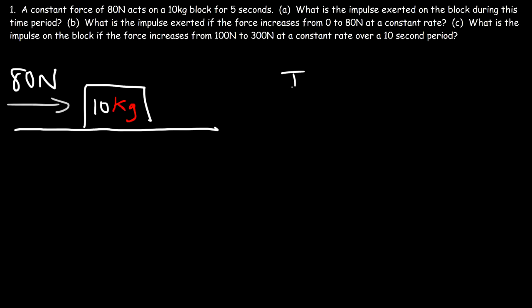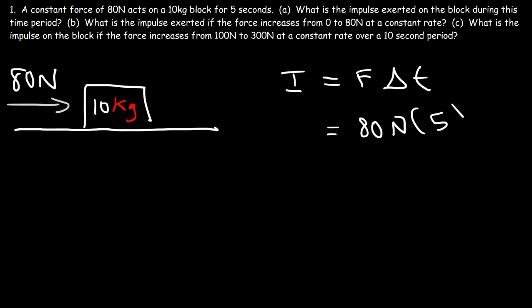To calculate the impulse, it's simply force multiplied by time. So it's going to be 80 newtons multiplied by a change in time of 5 seconds, giving us 400 newton-seconds.